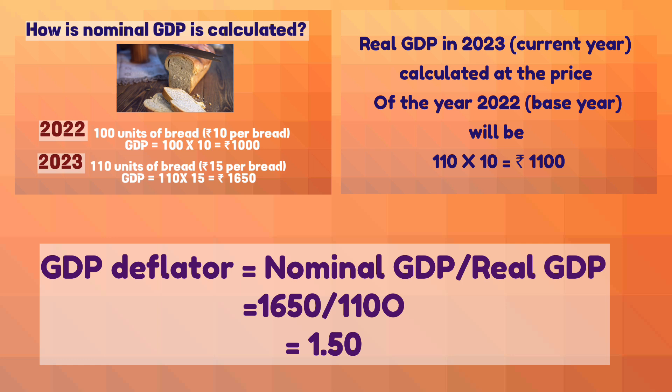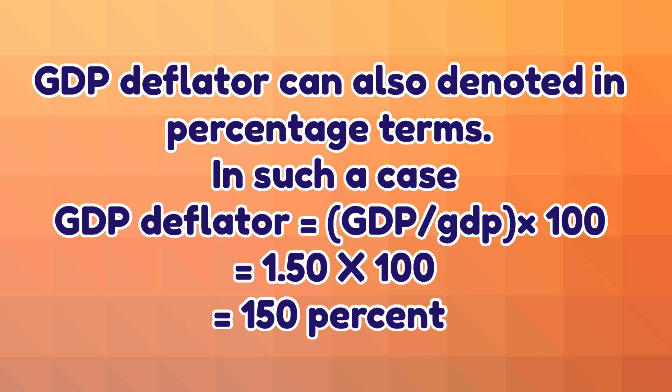Considering the previous example, GDP deflator = 1,650 ÷ 1,100 = 1.50. This implies that the price of bread produced in 2023 was 1.5 times the price in 2022, reflecting the increase in the price of bread from ₹10 to ₹15. GDP deflator can also be expressed in percentage terms — in this example it equals 1.5 × 100 = 150%.